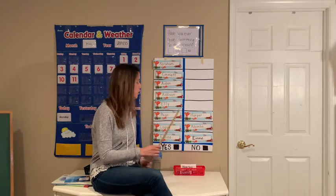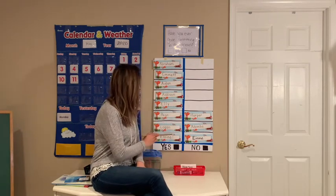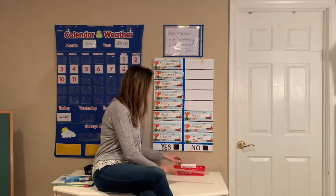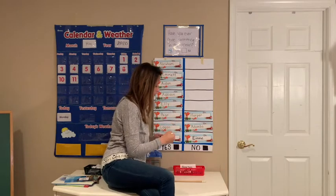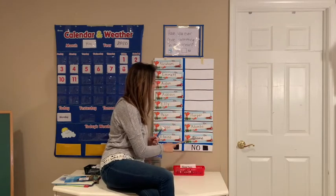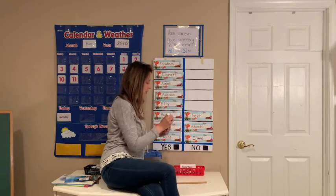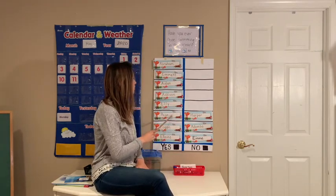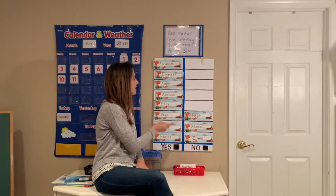Let's count all together — which has more? The yeses have more. Let's count: one, two, three, four, five, six, seven, eight. Eight yeses. And how many no's? One, two, three. Three friends said no, and that should equal eleven. Let's count: one, two, three, four, five, six, seven, eight, nine, ten, eleven. Very good, friends.